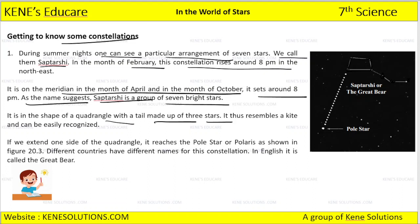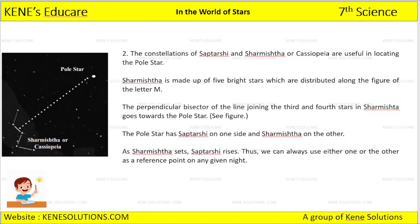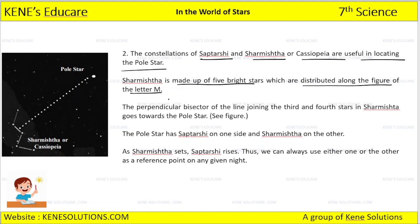If we extend one side of the quadrangle, it reaches the pole star or Polaris. Different countries have different names for this constellation — in English, we call it the Great Bear. The constellation of Saptarshi and Sharmishtha (or Cassiopeia) are useful in locating the pole star. Sharmishtha is made up of five bright stars distributed along the figure of the letter M.